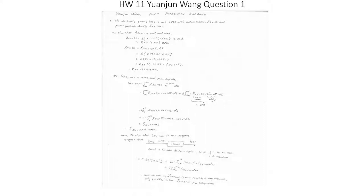Homework 11, Question 1. The stochastic process x(t) is real and wide-sense stationary with autocorrelation R_xx(τ) and power spectral density S_xx(ω). Part (a): to show that R_xx(τ) is real and even. We know that R_xx(τ) is equal to the expected value of x(t + τ) times x(t), because x(t) is real WSS.